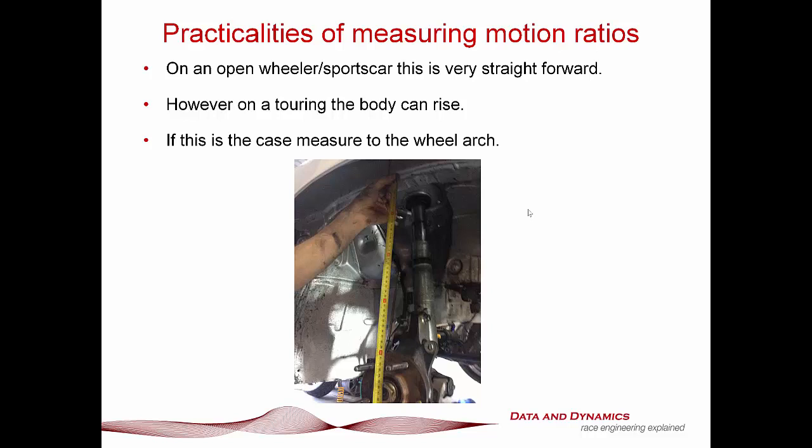On an open wheeler, this is very straightforward. However, on a touring car the body can rise. If this is the case, measure to the wheel arch. What you'll often find when you're doing this on a touring car is the gas pressure in the damper can actually raise the body. If you're in that sort of situation, not to worry. What you do is measure the wheel displacement from the center of the hub to the top of the wheel arch. That way it's completely consistent. If this is a touring car, measure your damper displacement from here to here or some other appropriate point. The important thing is to be consistent.